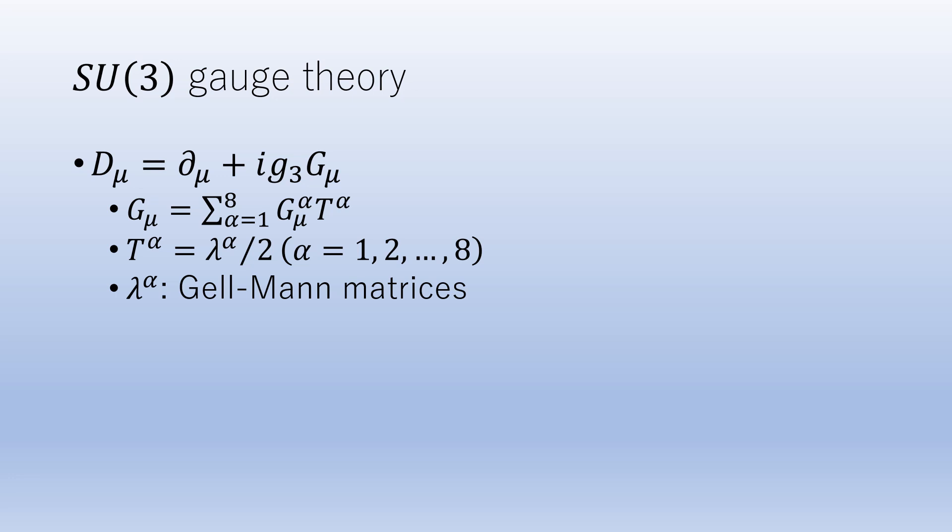In the natural world, there are baryons - protons, neutrons, etc. - consisting of three quarks, and mesons - pions, etc. - consisting of quark and anti-quark pairs. The force acting between these quarks is the strong force.